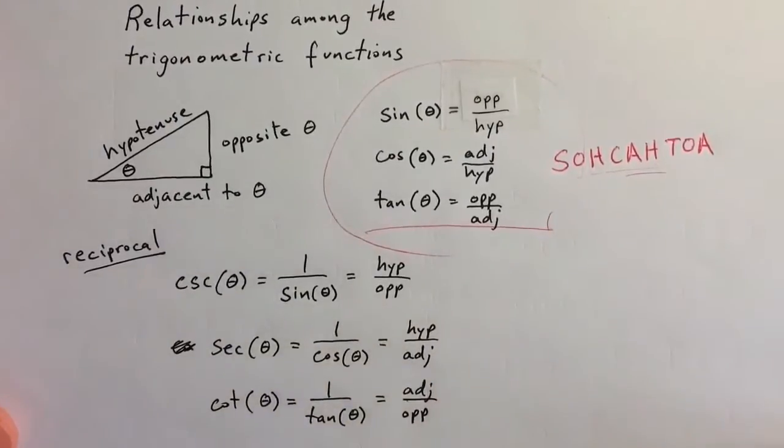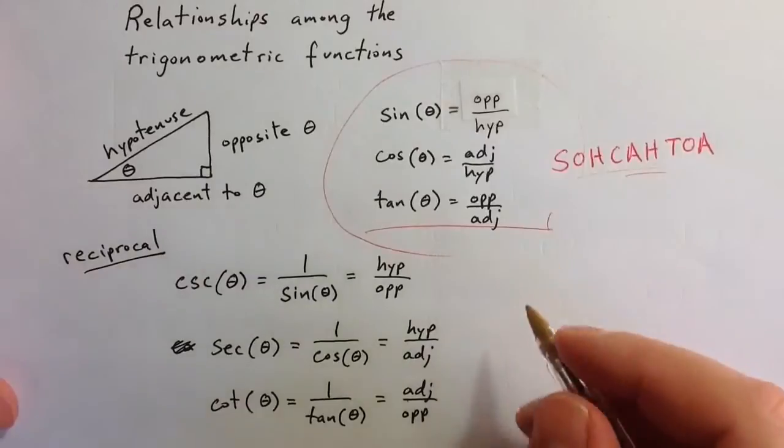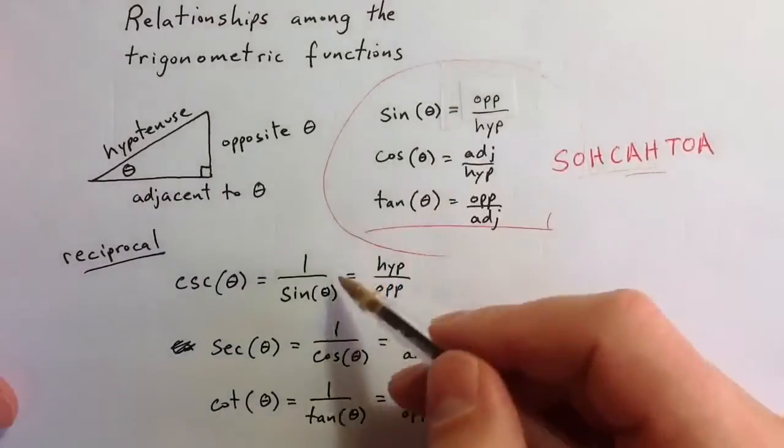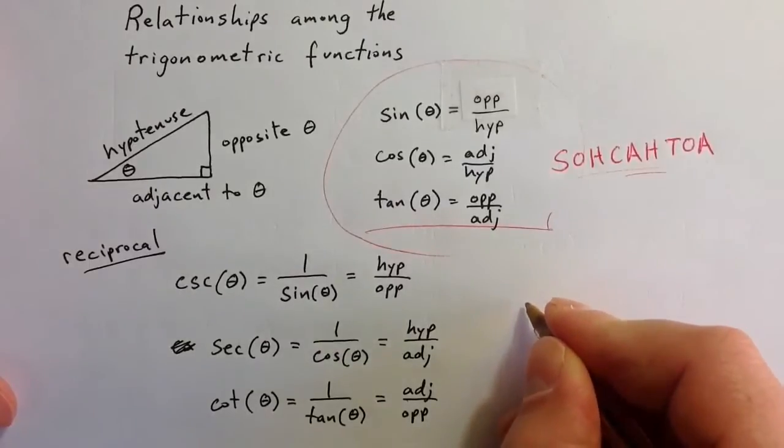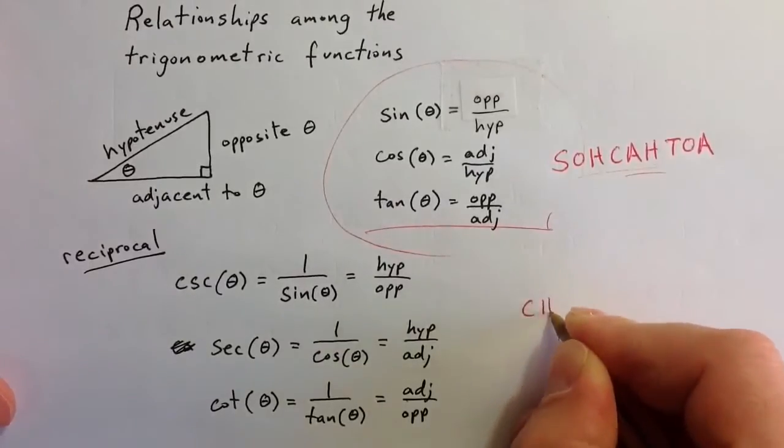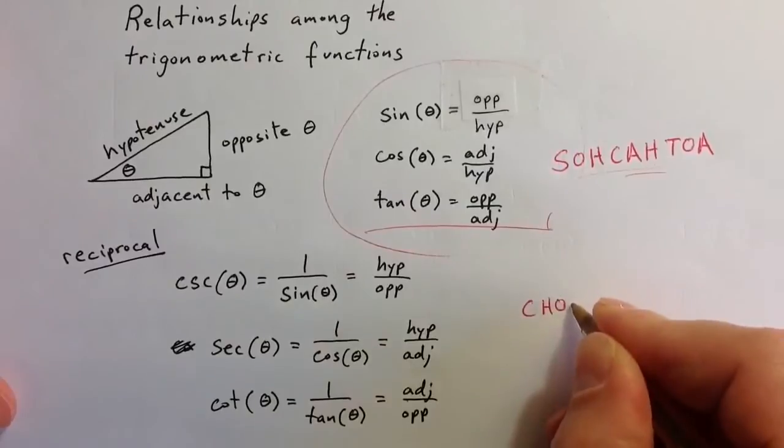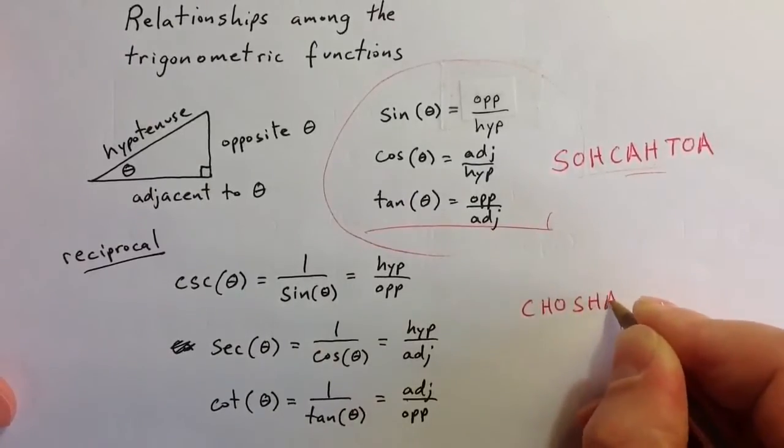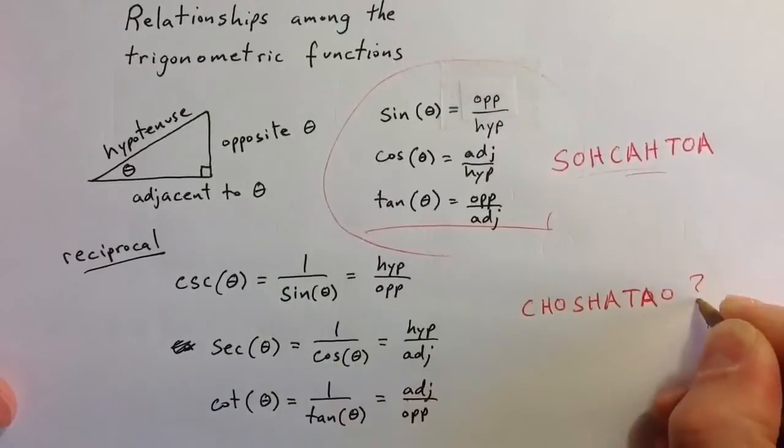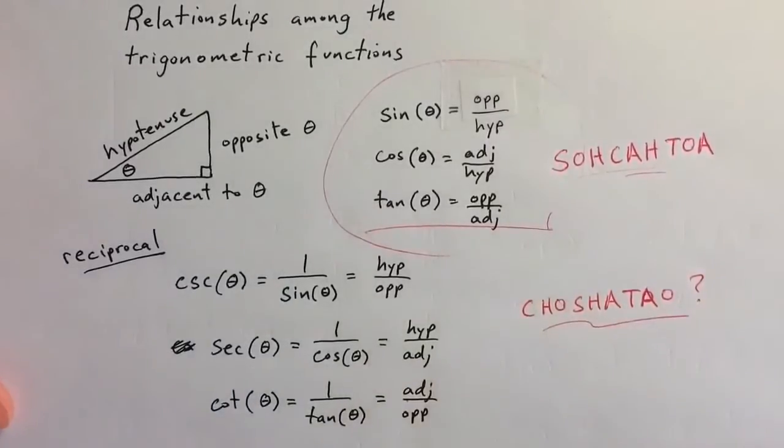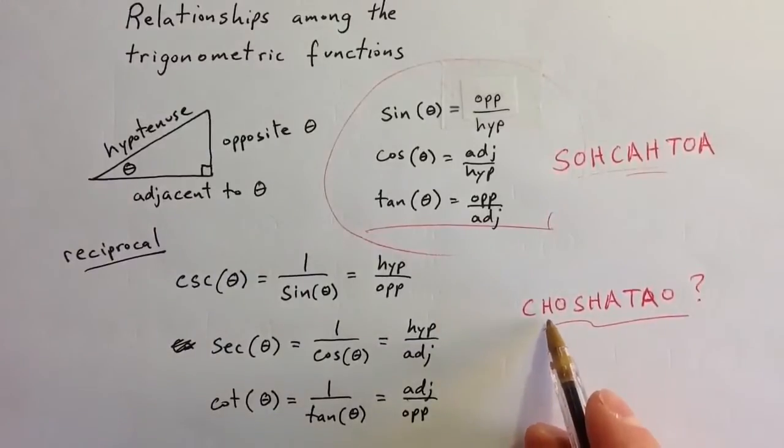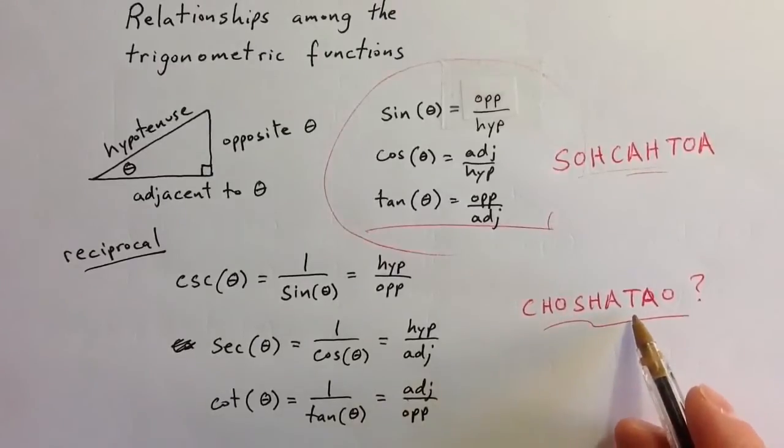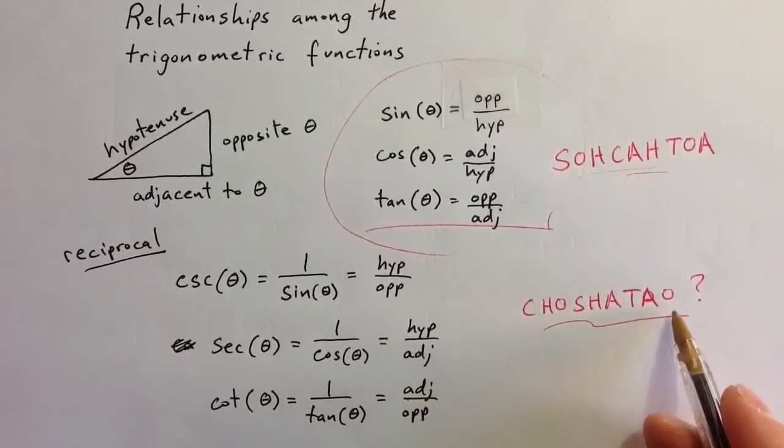The reciprocals, you kind of need to memorize and remember which goes with which. You could think of the word CHOCHATAU. I don't know if that's something people use or not, but it's there. Where cosecant is the hypotenuse over opposite, secant is the hypotenuse over the adjacent side, and cotangent is the adjacent over the opposite side.